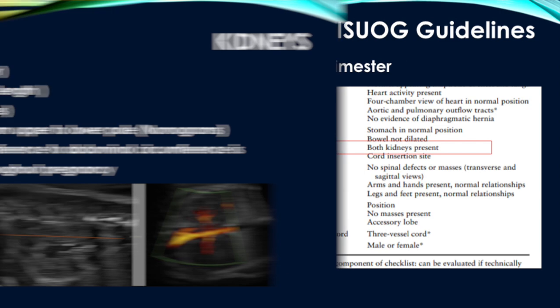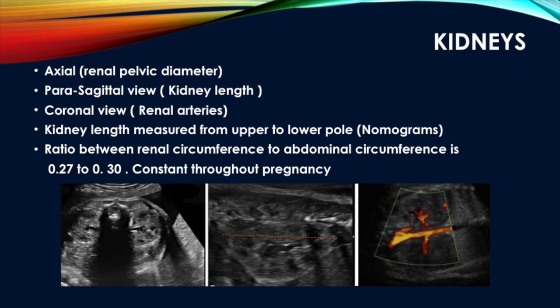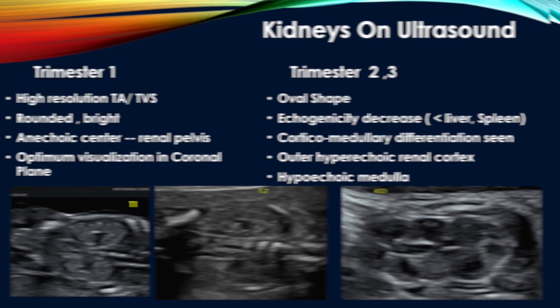The kidneys are evaluated in the axial, parasagittal, and coronal planes. In the axial view we take the renal pelvic diameter; in the parasagittal view the renal length is measured from the upper to the lower pole, and there are different nomograms available regarding length and weeks of gestation. In the coronal view we evaluate the renal arteries; there is a ratio between the renal circumference and the abdominal circumference of 0.27 ± 0.03, which is constant throughout pregnancy.